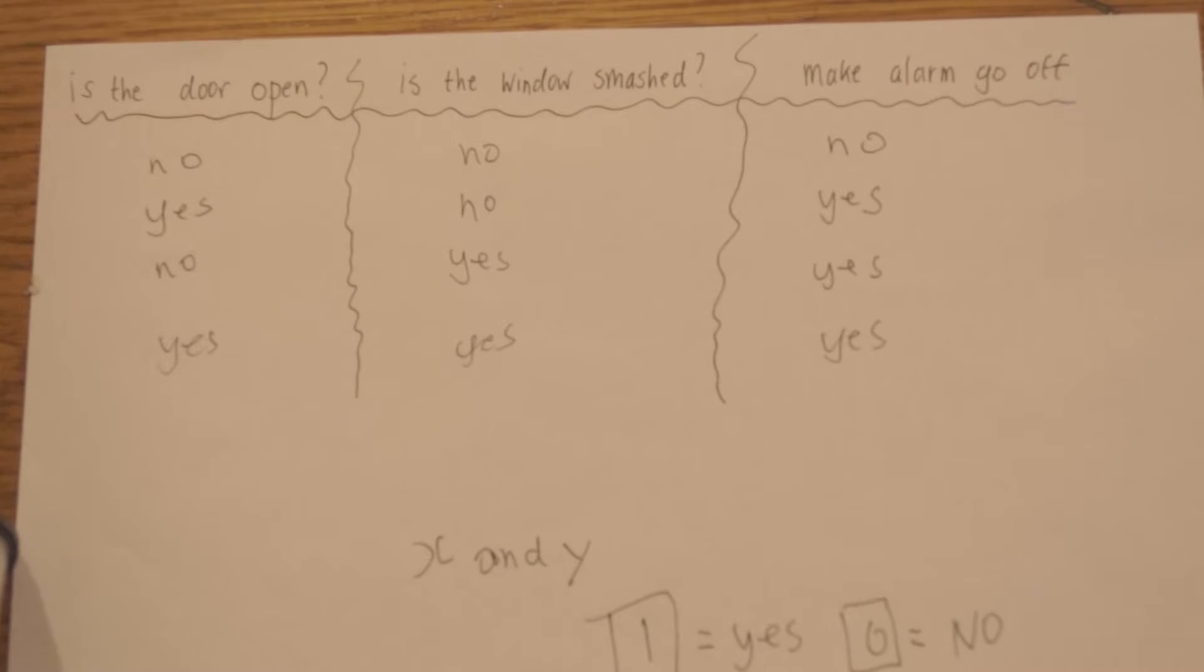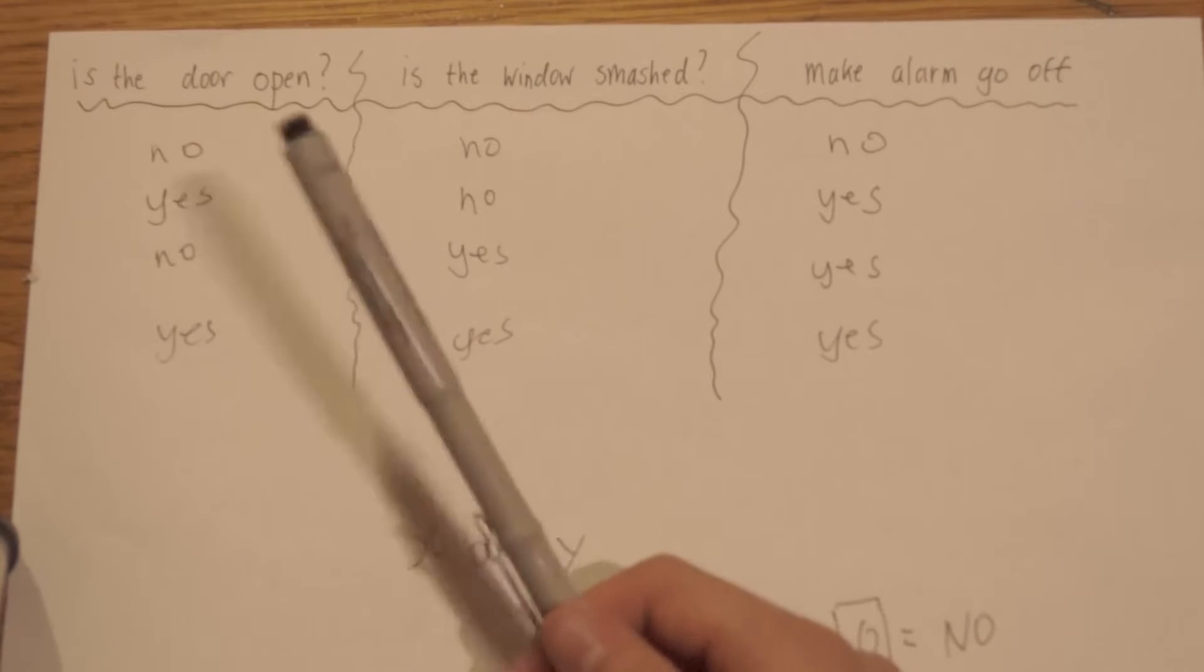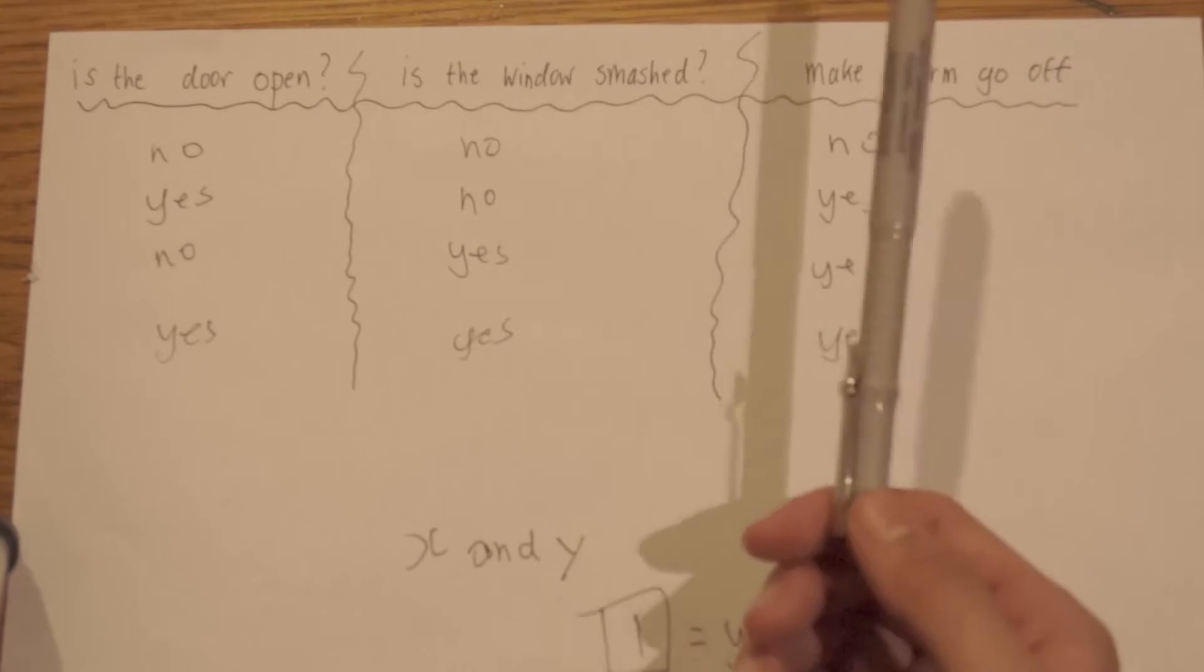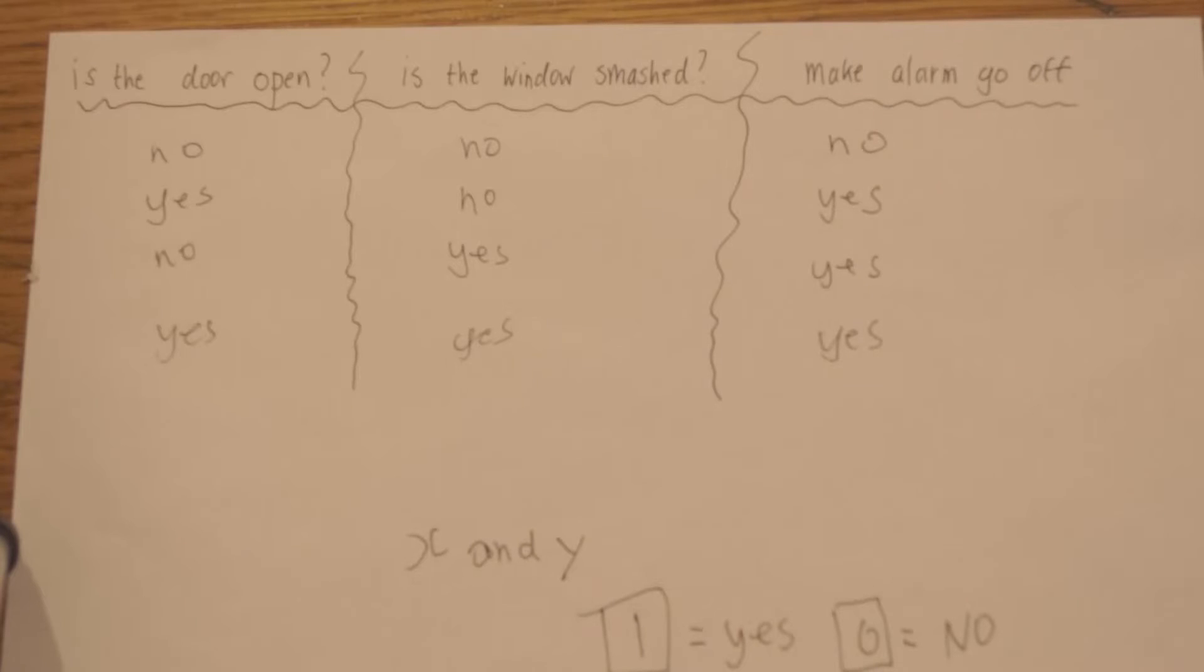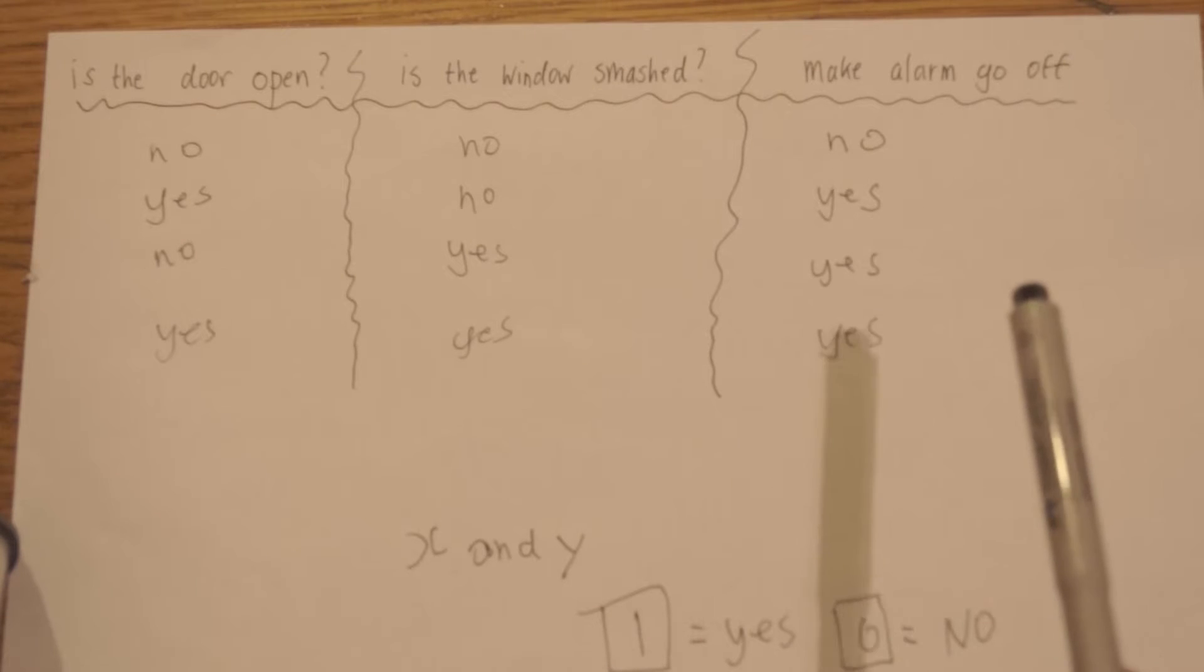Now you have a table here. Imagine you have a burglar alarm that will go off if either the door is open or the window is smashed. Here I've drawn a table that shows is the door open, is the window smashed and broken. If no, therefore the alarm will not go off because the alarm shouldn't randomly go off if there's no burglar there.